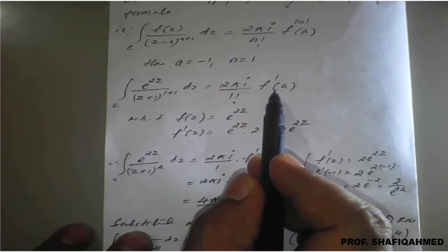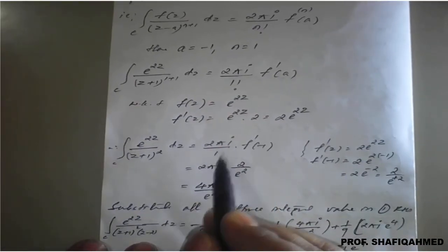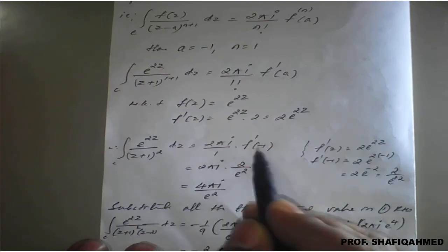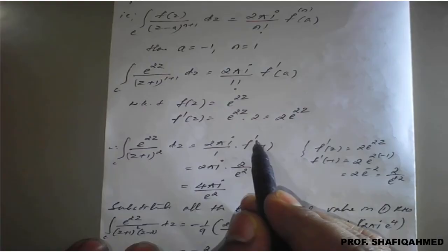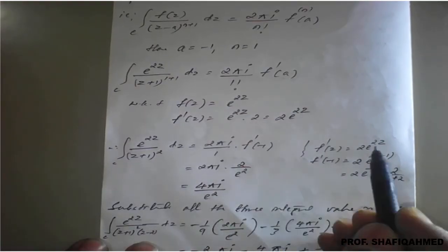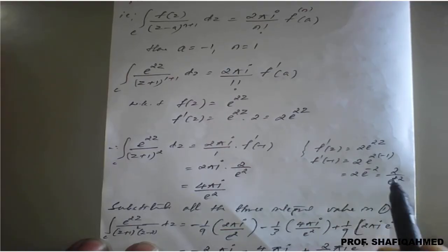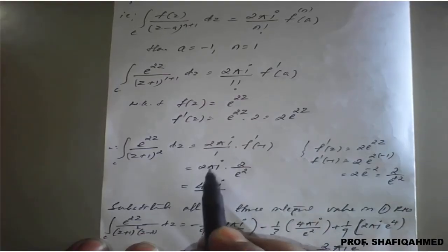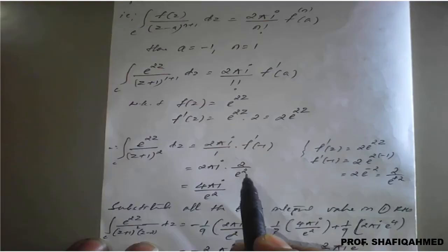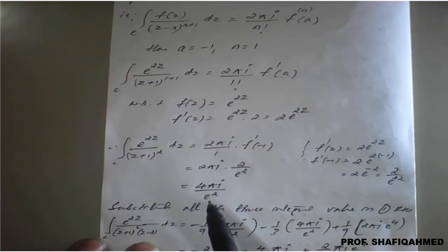This value we apply: 2 pi i upon 1 factorial times f dash of minus 1. Since f dash of z is 2 times e raised to 2z, applying z equal to minus 1 gives 2 upon e raised to 2. Therefore, the result is 2 pi i times 2 upon e raised to 2, which equals 4 pi i upon e raised to 2.